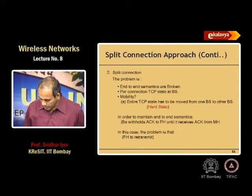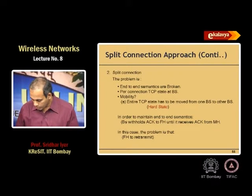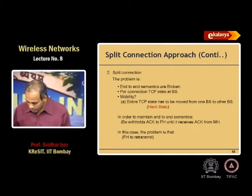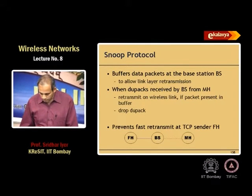To maintain end-to-end semantics, the base station can withhold ACKs to the fixed host until it receives an ACK from the mobile host. But if the wireless link retransmission takes too long, this can cause the fixed host to retransmit, corrupting all its RTO calculations. The other scheme to address this is called the snoop protocol — where the base station snoops on passing packets.